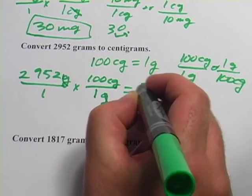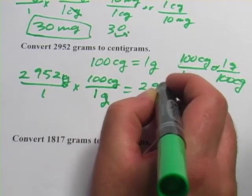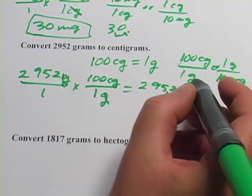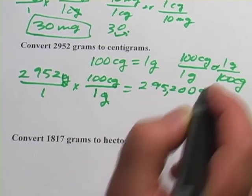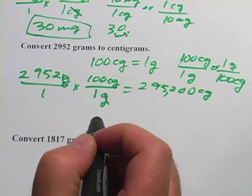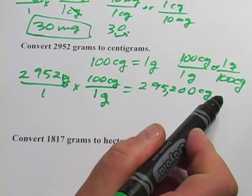So we're going to basically add two zeros there. So 295,200 centigrams is our answer there. And what we did there is we moved the decimal two points that way.